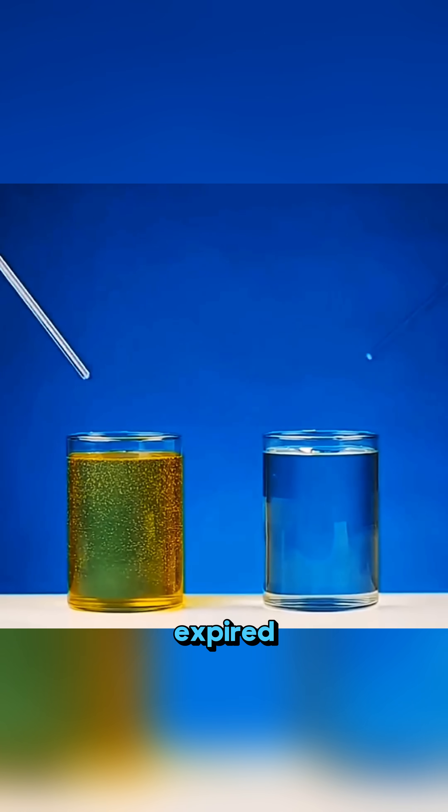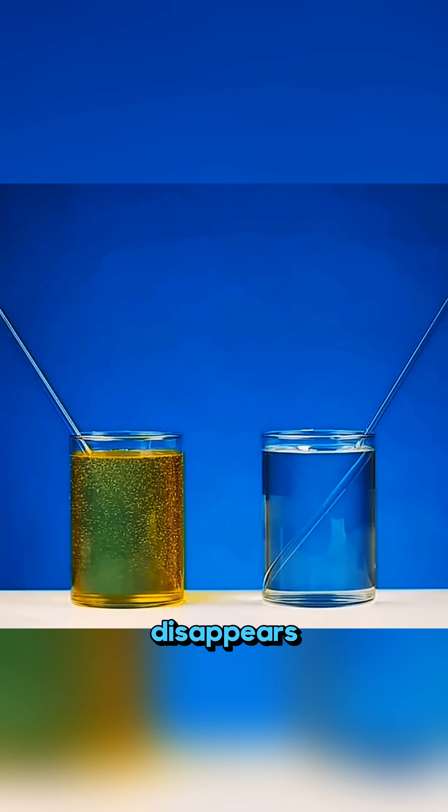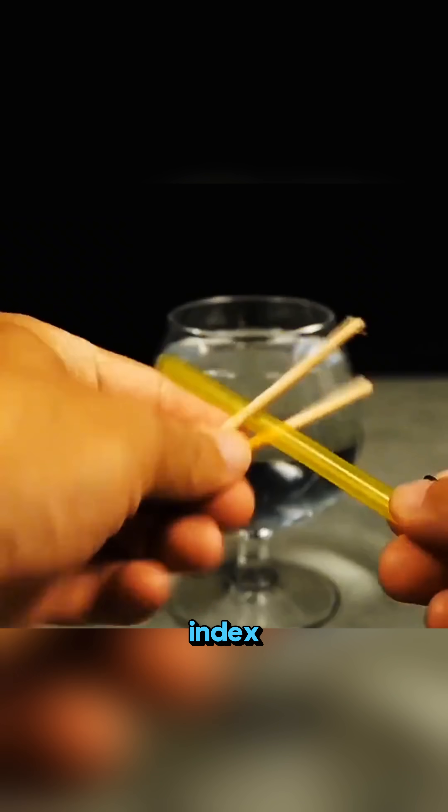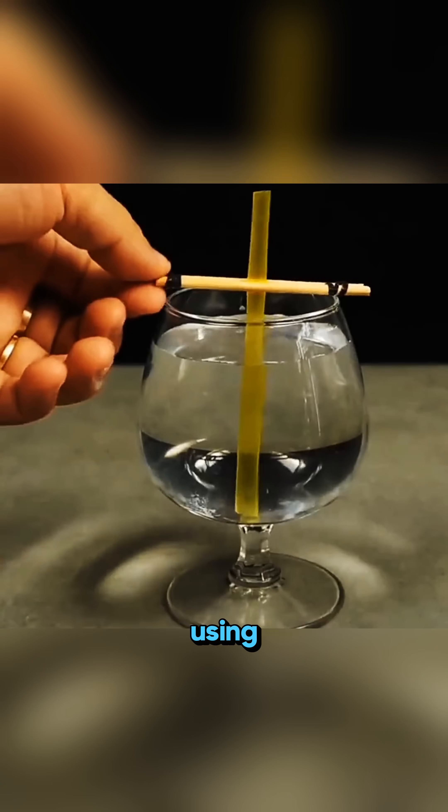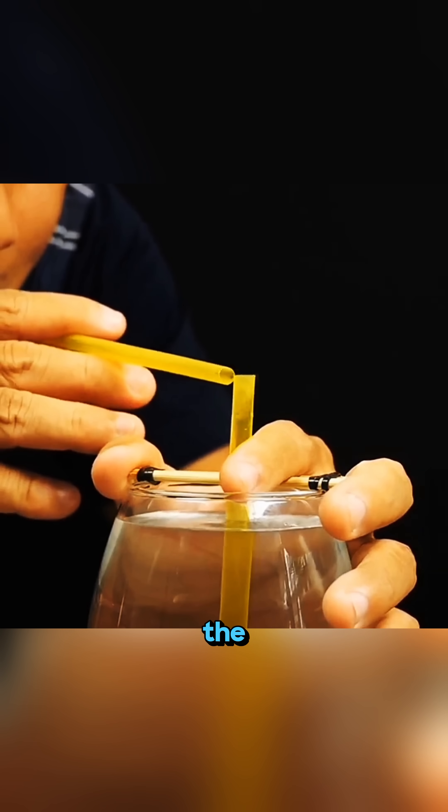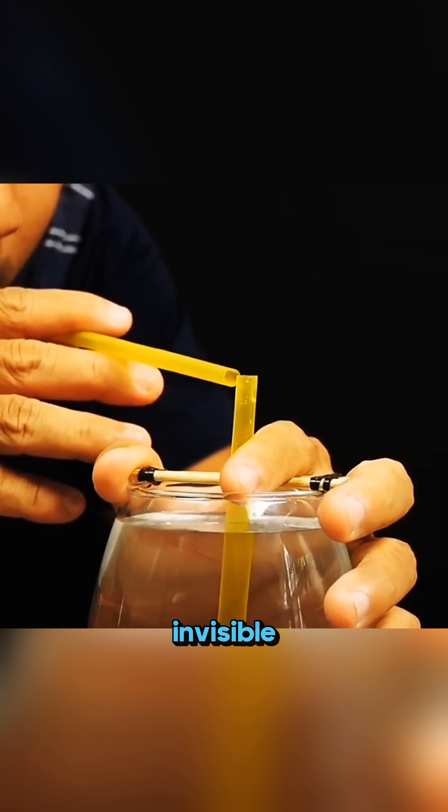Put a glass rod into expired cooking oil, and it completely disappears because the oil and glass share almost the same refractive index. Rest a straw across a cup using wooden sticks, blow into another straw aimed at it, and the water inside the cup shoots upward as if pushed by invisible force.